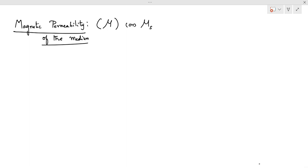Magnetic permeability of a given solid or medium can be defined as the ratio between B and H. Its unit is Henry per meter, where B denotes the magnetic induction or magnetic flux density, and H denotes the external applied magnetic field or magnetic field strength.